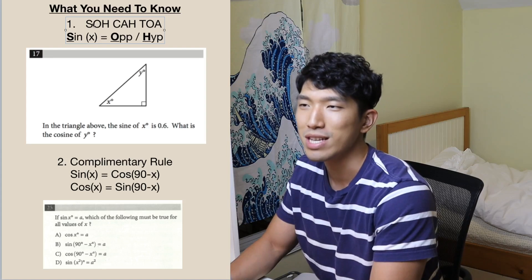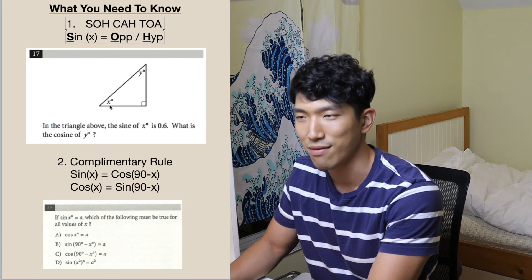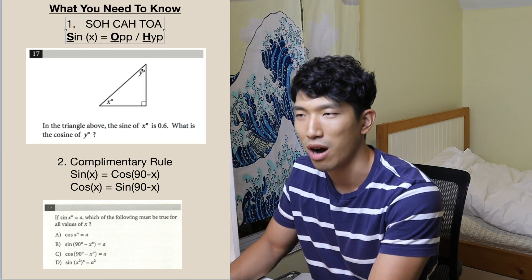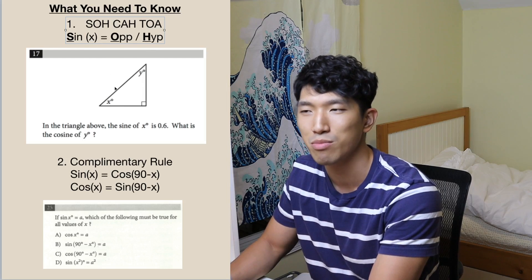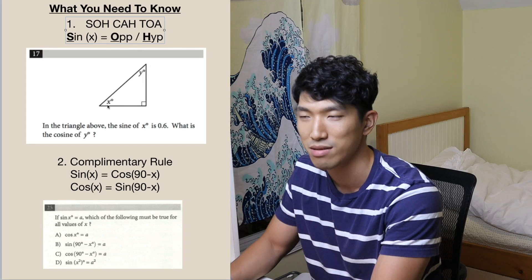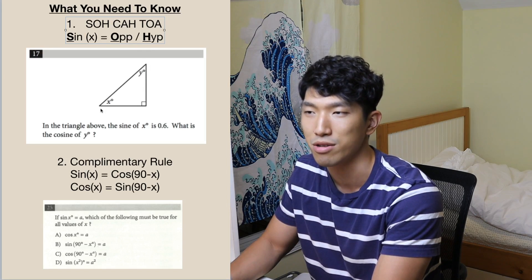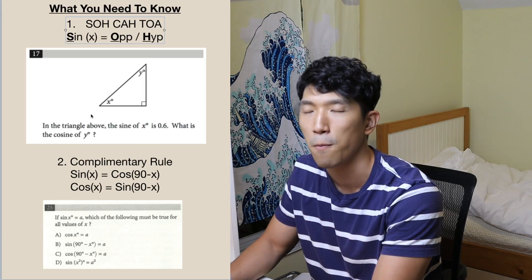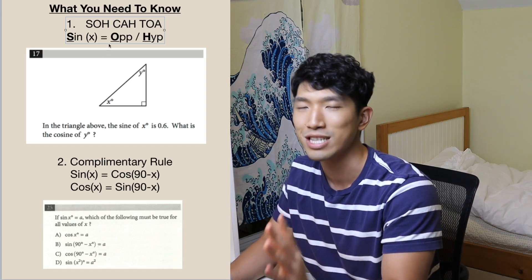The first type is SOHCAHTOA. Sine of x is equal to opposite over hypotenuse. So x is going to be the angle, opposite is going to be the length of the opposite side of the angle, and hypotenuse is going to be the length of the hypotenuse of the triangle. So the first type of trigonometry question is SOHCAHTOA.